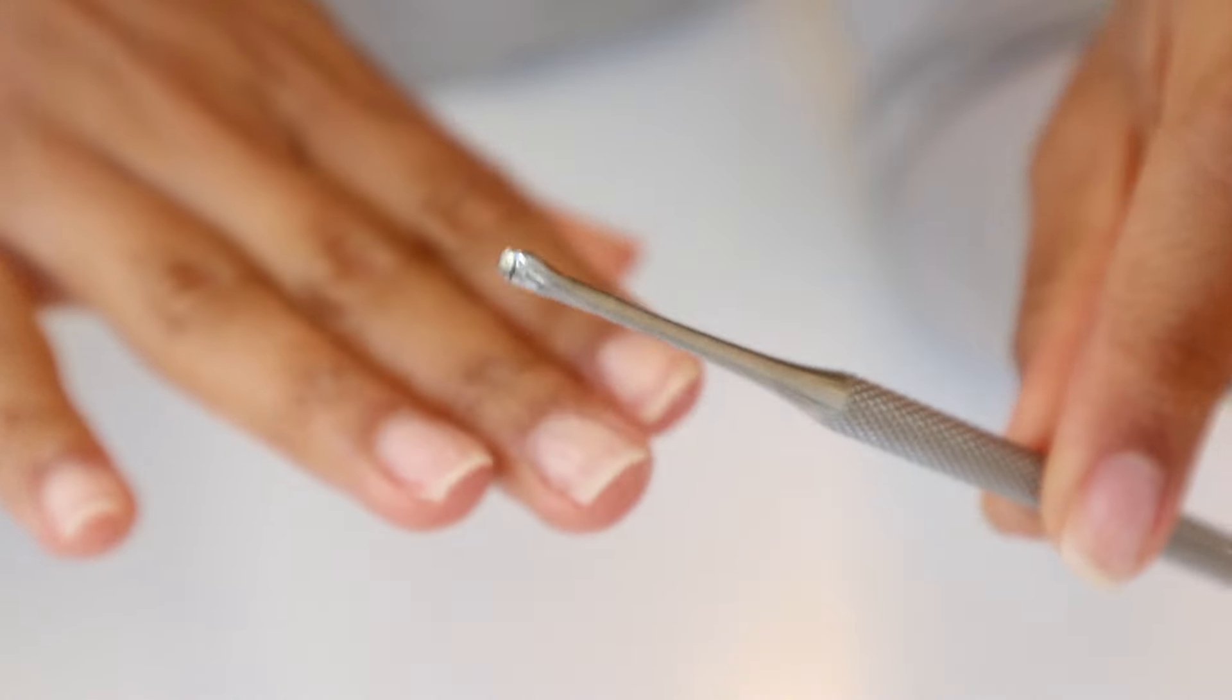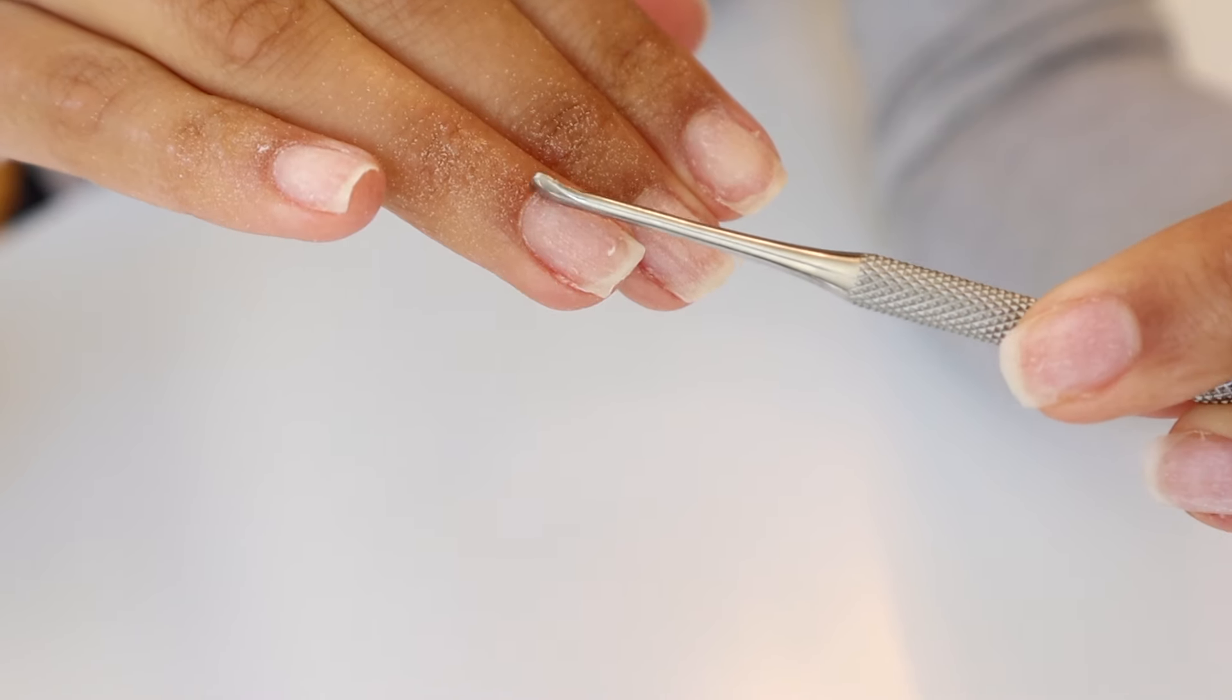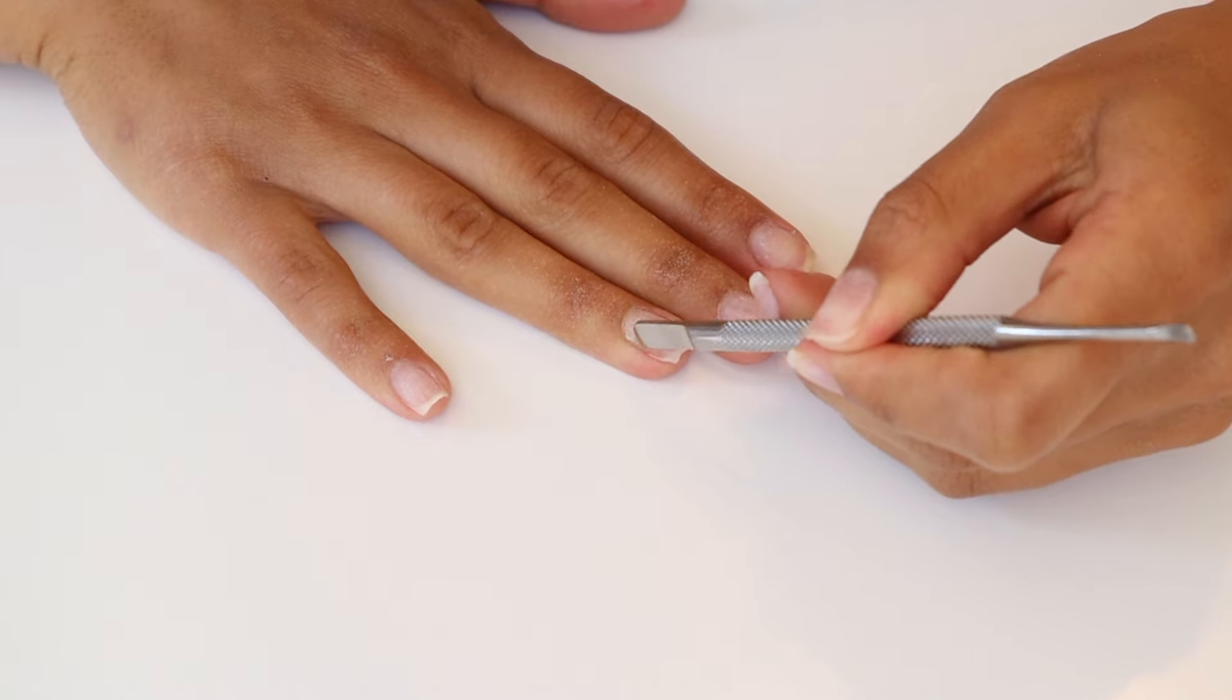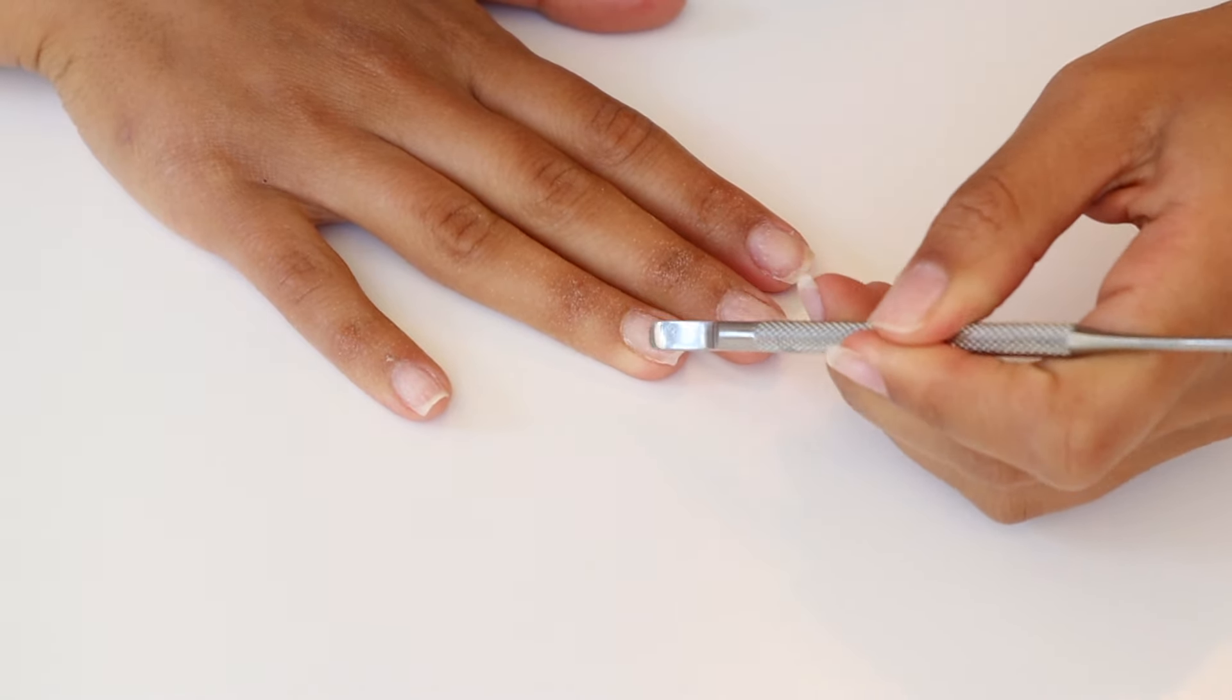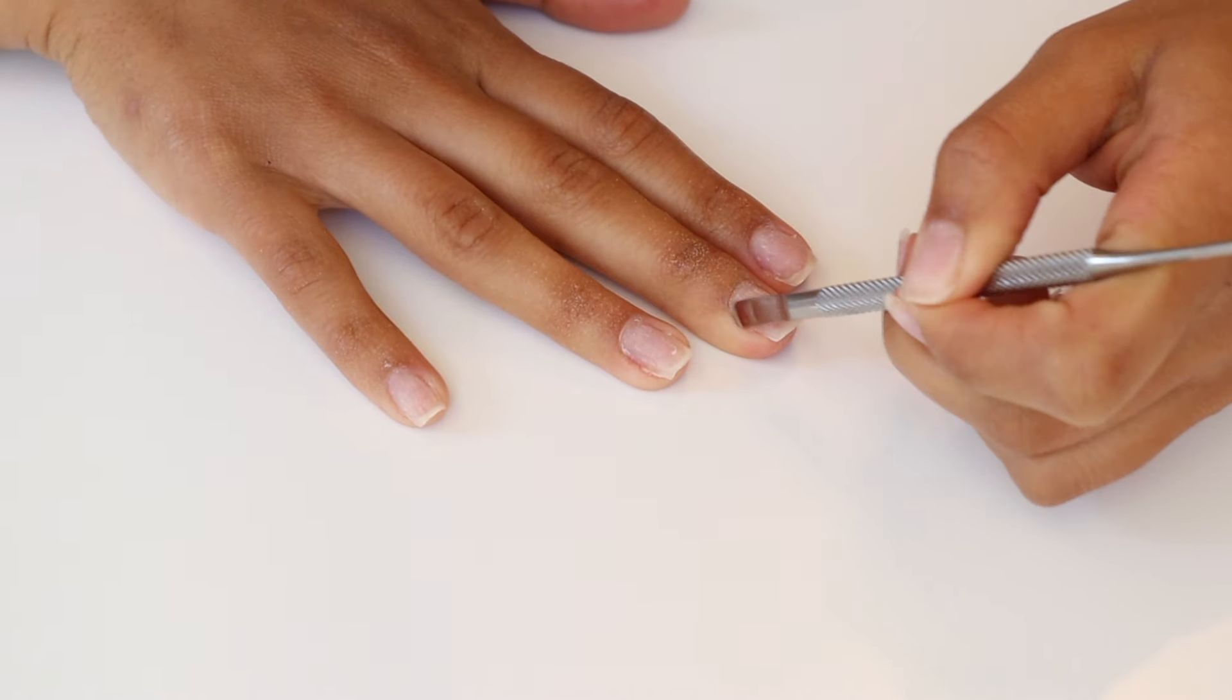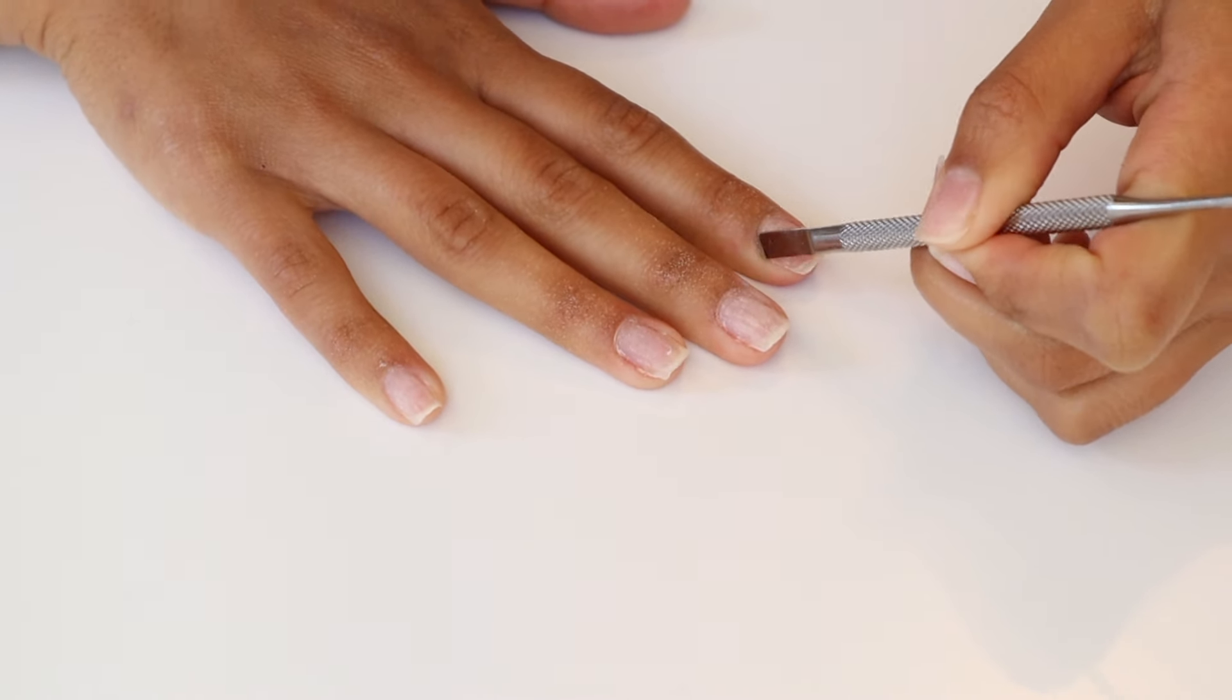Once you've buffed out your nails, it is now time to push your cuticles back. As you can see here, I have this nice little tool that always helps me out and I switch back and forth from the thicker end and the smaller end depending on what I need to do. So you can go ahead and do that to every single one of your nails and then we'll move on to the next step.